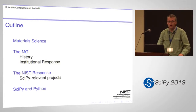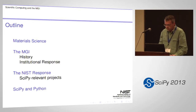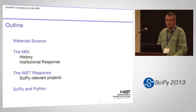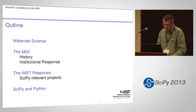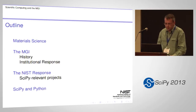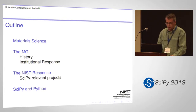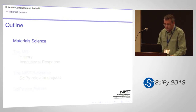This is an outline of the talk. I'm going to do a few minutes on what material science is, what the MGI is, where it came from conceptually, how institutions in general are responding to it. I'll focus more on the NIST response, mention a few SciPy-relevant projects, then talk about SciPy and Python in the context of the MGI, and close with some hopefully useful URLs and things to do.